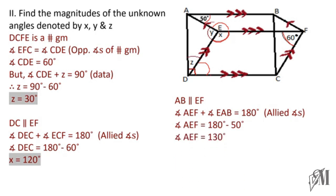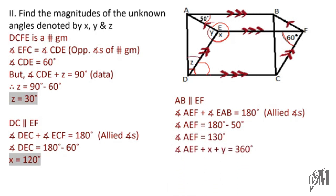We know the angle around a point is 360 degrees, so angle AEF plus x plus y equals 360. We have already found x equals 120 and AEF equals 130, so y equals 360 minus 130 minus 120, which is 110 degrees. This is how you find the unknown angles.